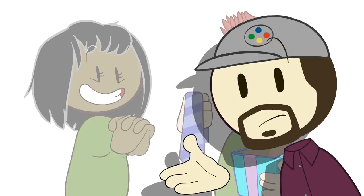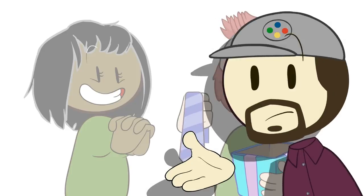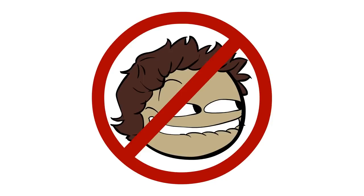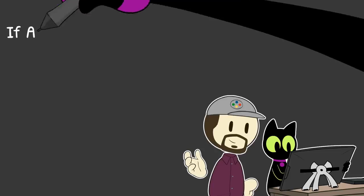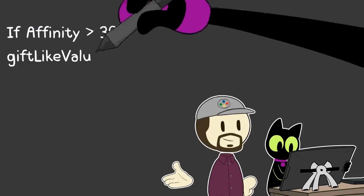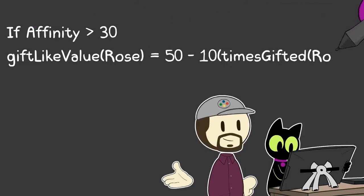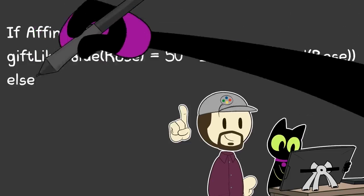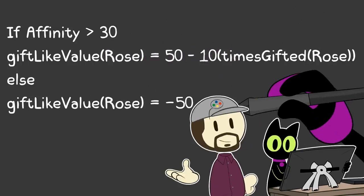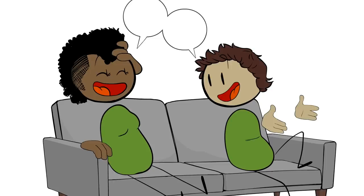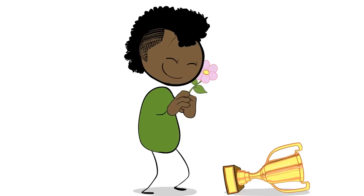But you know what's really creepy and not at all okay in real life? Someone who you don't really know, or may not even like in the slightest, giving you a romantic gift. So let's make it: if affinity is greater than 30, gift-like value equals 50 minus 10 times gifted. Else, gift-like value equals negative 50. By putting those conditionals in there, we can make the interaction between the player and the character feel more real, and the character on the receiving end less like a trophy.